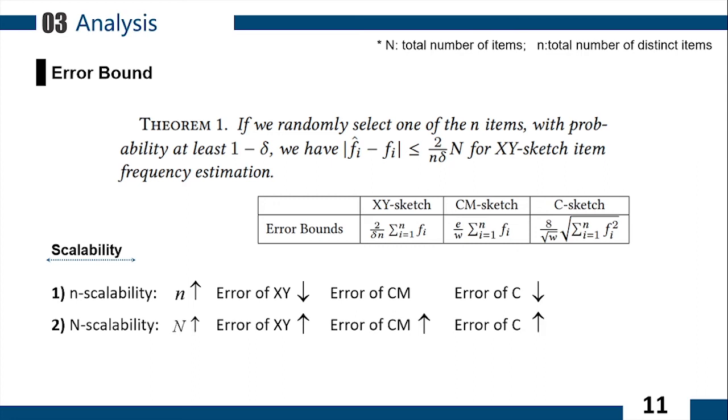When the value of big N increases, the error bounds of all these three sketches increase. In a more general situation, the space budget is small. The factor in the error bounds of XY-Sketch will be smaller than the factor in the error bounds of CM-Sketch, which shows that XY-Sketch rises more slowly as big N increases. Therefore, XY-Sketch has good scalability.